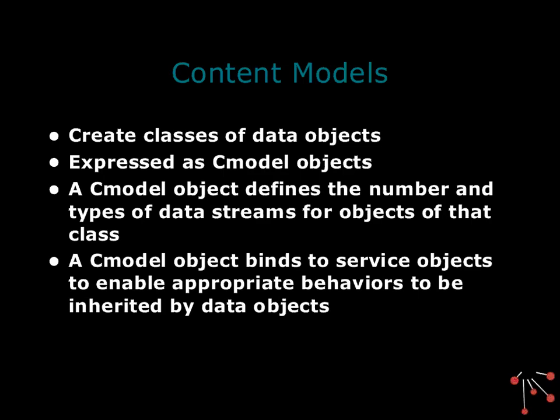Content models, as of version 3.0 of Fedora, are formalized as objects in the system. These are objects that represent classes of data objects. The reference implementation has a schema for the data stream in the object that defines the rules for the types of data streams — how many and what their types are in any given class of objects. That schema is replaceable if you want to put your own in. The content model object defines the number and types of data streams for objects of that class, and it also binds each data object — through the CModel object — to services that provide the behaviors we talked about earlier.